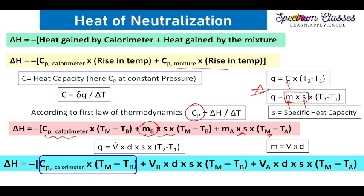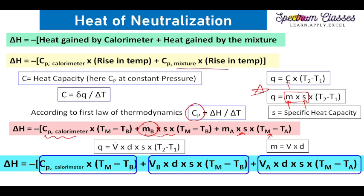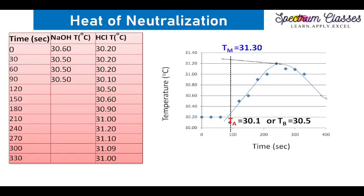This equation can also be divided into three parts: heat absorbed by the calorimeter, heat gained by the base, and heat gained by the acid — written separately instead of as a mixture. This is the formula we are going to use for the calculation part, and these are the readings observed during the experiment.